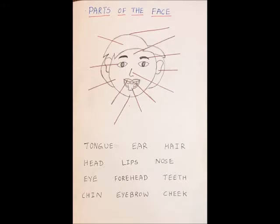The next one is parts of the face. I drew a face here, and from each part I've given a line, so the child has to identify all the parts and write the name for each part. The names of each part are also given below the picture.